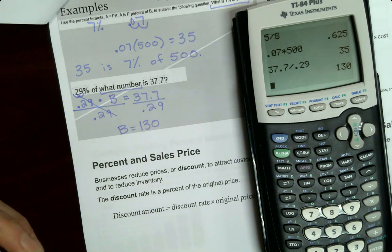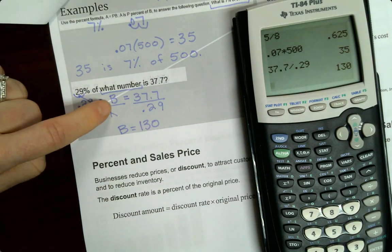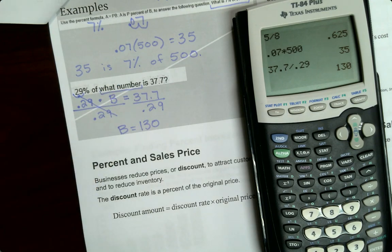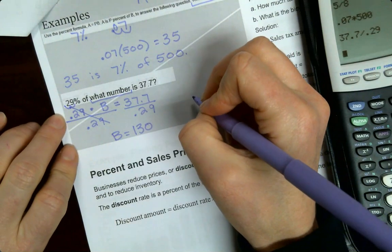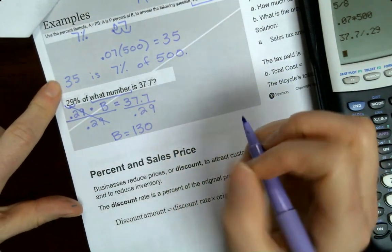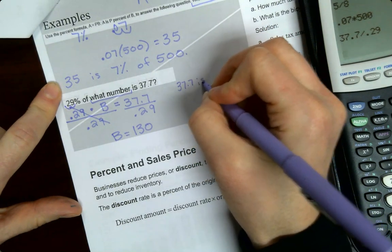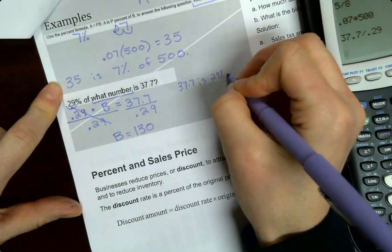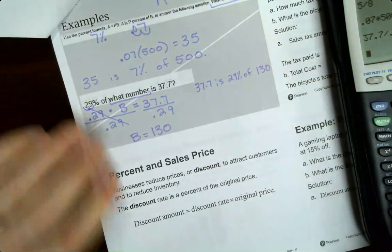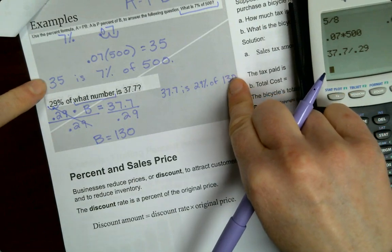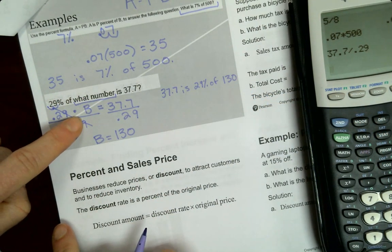And so then I can do 37.7 divided by 0.29, 130. So it should be larger because you're doing 29% of some number. So it's got to be bigger than 37.7. Then we can rewrite it. 37.7 is 29% of 130. So that's written in the same form as this because it says 29% of what number.